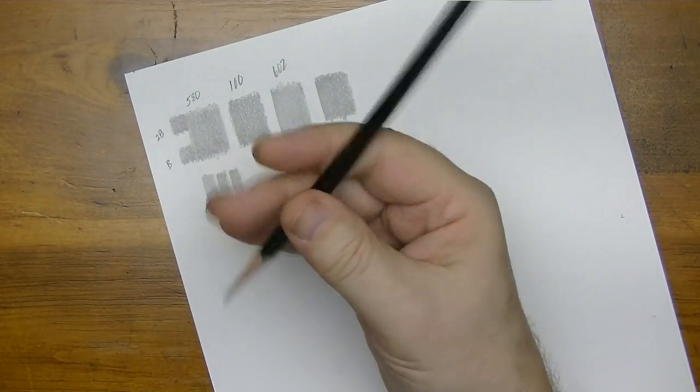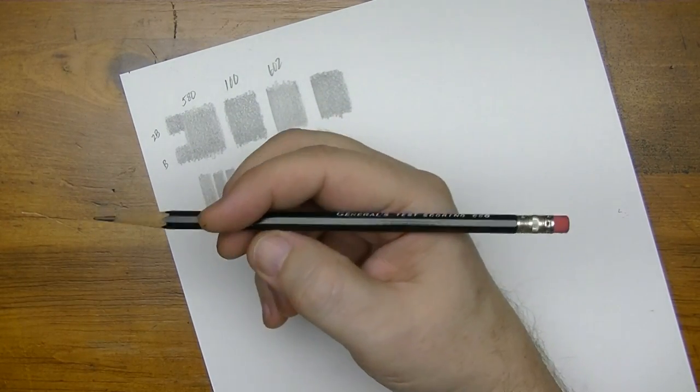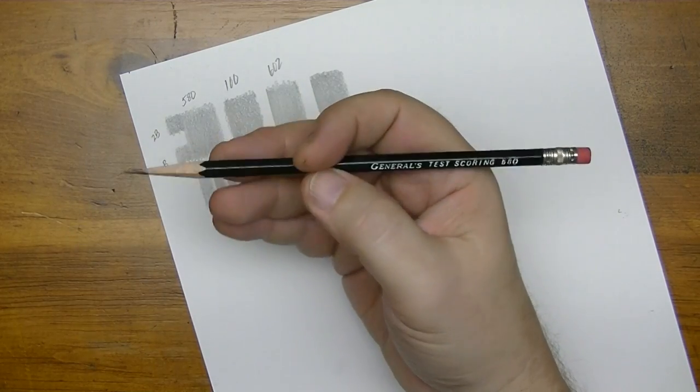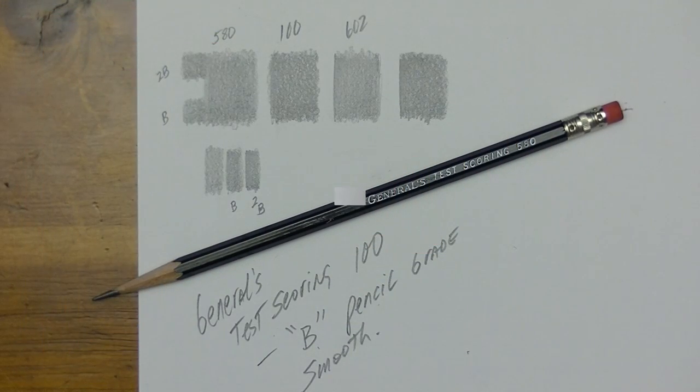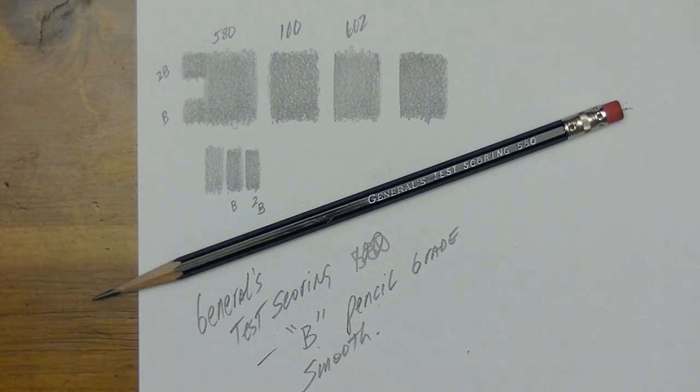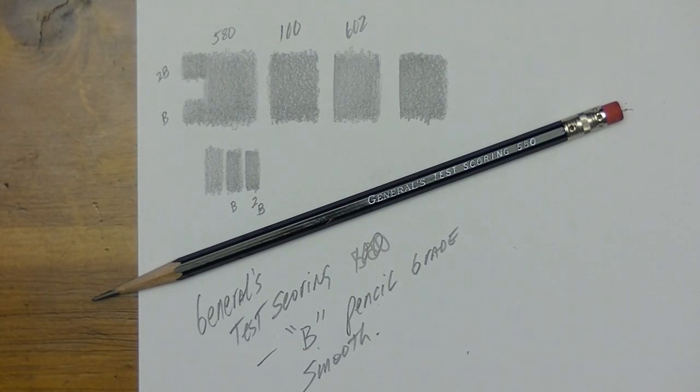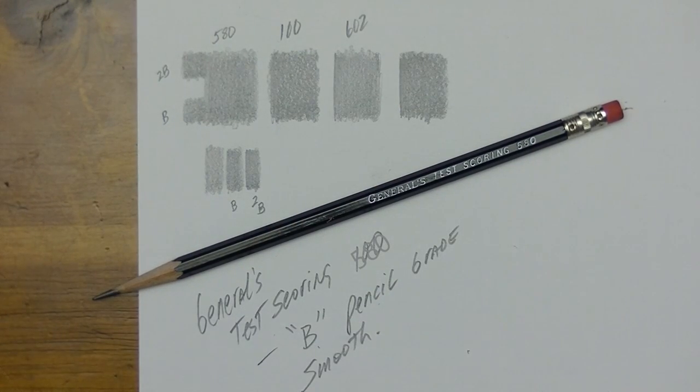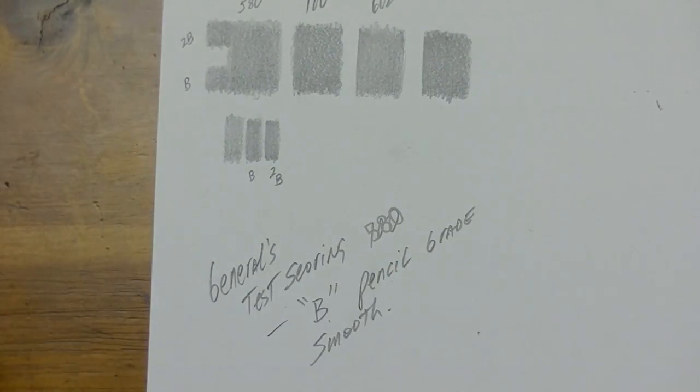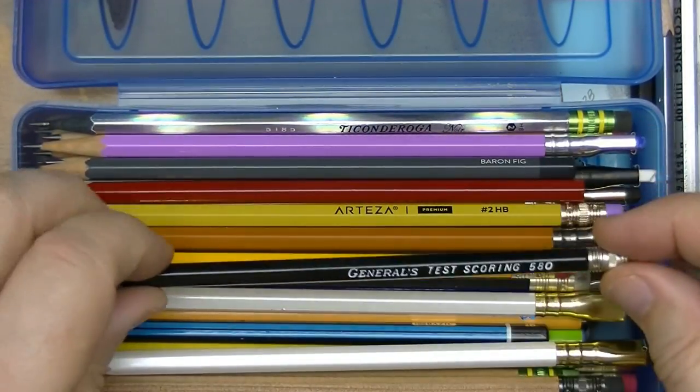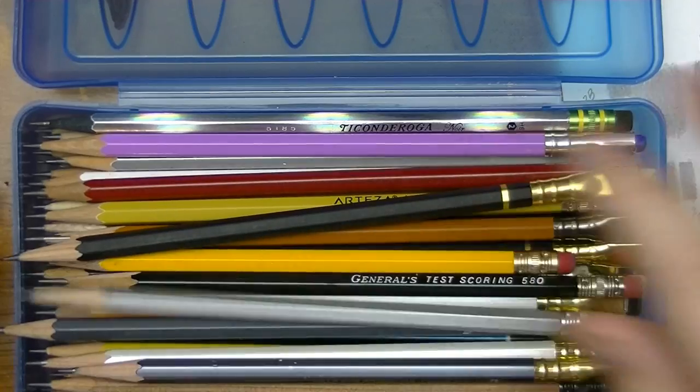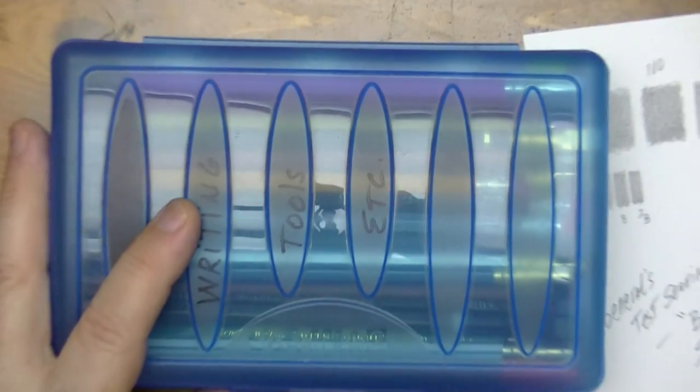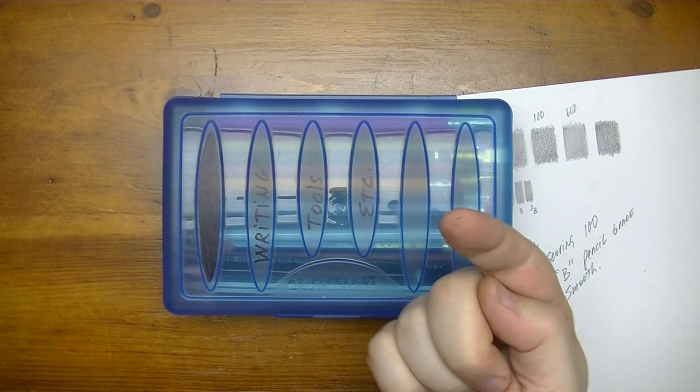Now these ran me about a buck a piece these pencils here. These you get like 12 of them for $12.80 of these test scoring pencils. So they're about a buck each. It is a good pencil I like it. It's smooth enough to write with, dark enough to see what you're marking, and especially if you're doing your crosswords and stuff. And it's definitely going to go in my collectors kit here. So welcome General's test scoring 580. Join the party. And until next time thanks for watching.